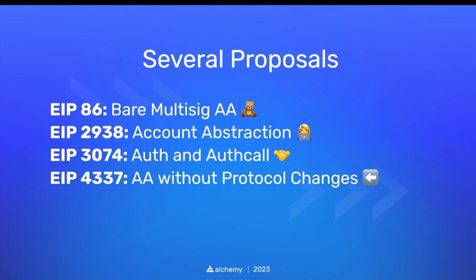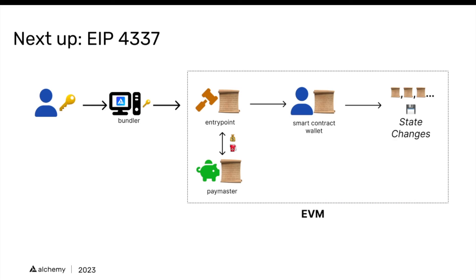There are several proposals for account abstraction today. We're going to focus on EIP-4337, primarily because it achieves account abstraction without protocol changes. The other proposals — including EIP-86, which was initially proposed by Vitalik in 2017 — are great, but they all require changes to Ethereum's underlying protocol, making them harder to move forward with. This idea of account abstraction has been around for quite a while, but it's really picked up steam in the last couple of years, especially with EIP-4337. In the next video, we'll talk about EIP-4337 and everything required to make it work.